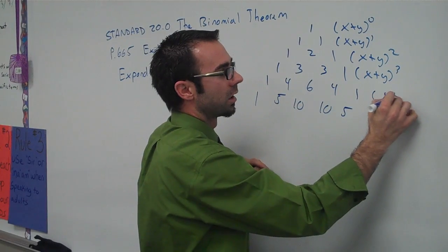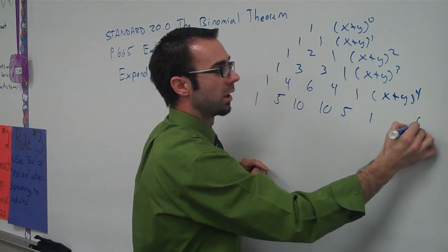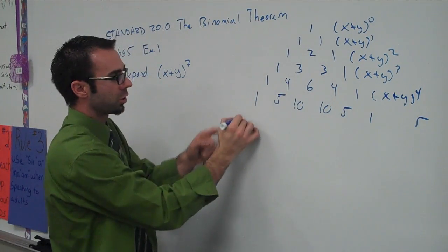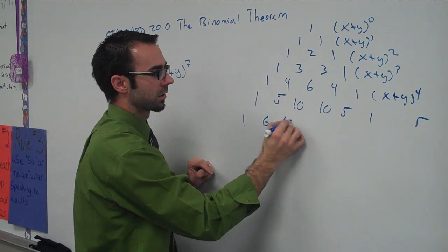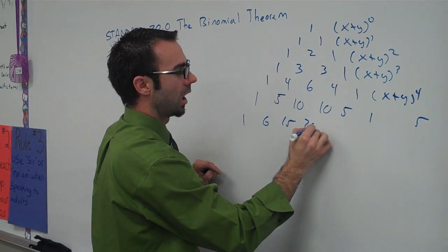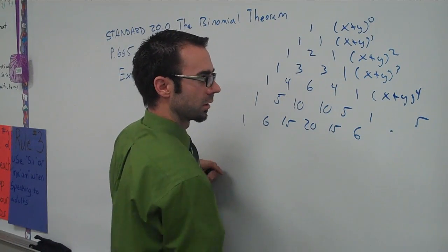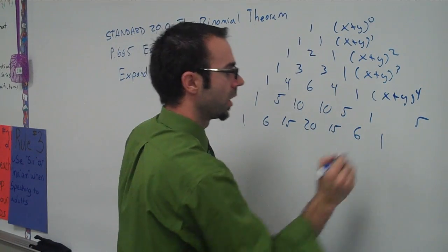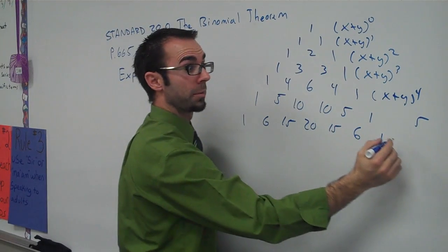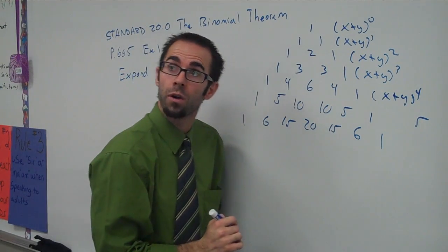So that means we have to keep going on here. This is for three, this is for four, five, so we have to go two more rows. So we're going to do one, six, fifteen, twenty, fifteen, six, and one. And then one more row, so that means we can have the x plus y to the power of seven.